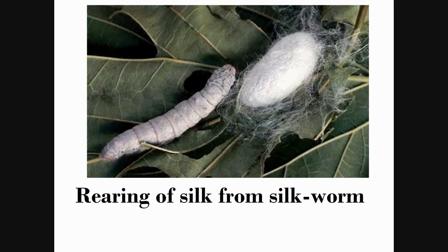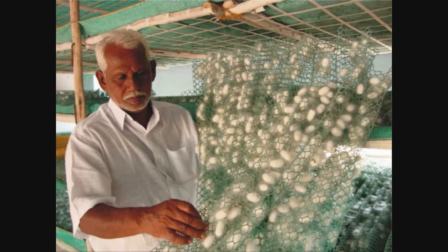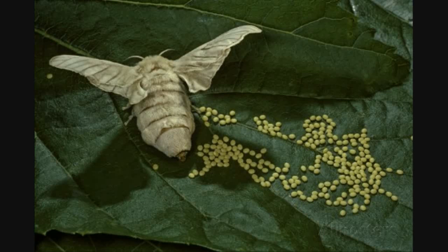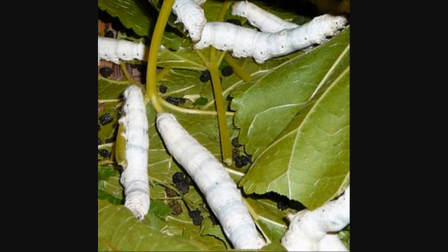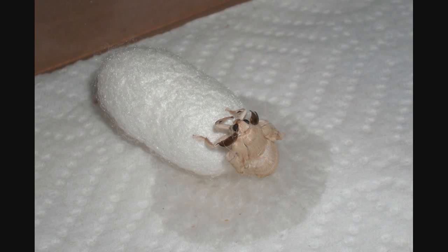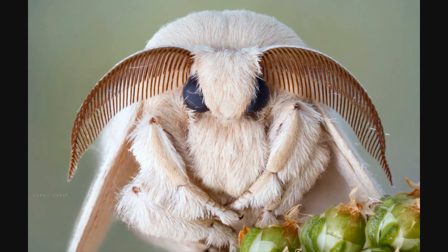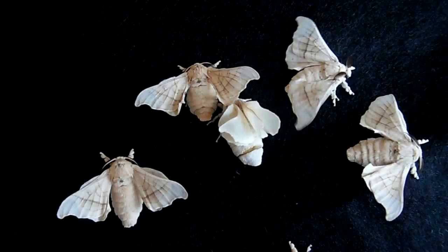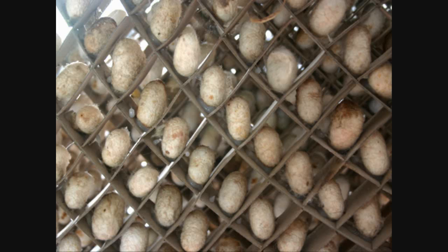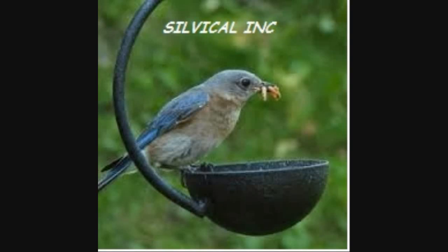Sericulture is the branch of zoology that deals with rearing of silkworms for the production of silk. The life cycle of the silk moth begins with the adult female laying eggs on mulberry leaves. The caterpillar feeds on mulberry leaves, hatches, undergoes the cocoon stage, and then turns into an adult. The best silk is produced by the silkworm Bombyx mori. Other silkworms exist but do not have the same quality. Being small insects, silkworms need tender care against predators, infestations, and diseases.